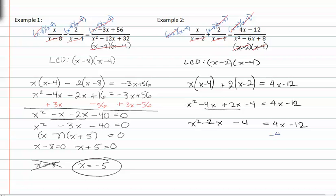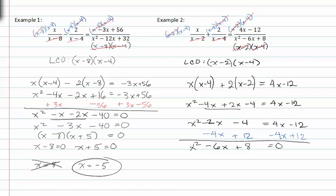From here, I'm going to set my equation equal to zero by subtracting four x from both sides and adding twelve to both sides. This will give me a quadratic equation x squared minus six x plus eight equals zero. When I factor this, my factors are x minus four x minus two equals zero.